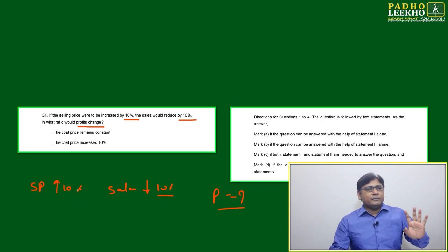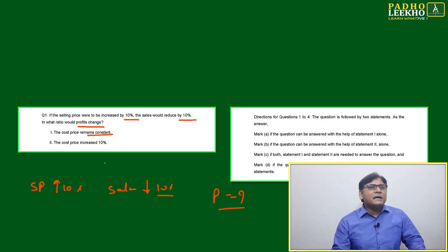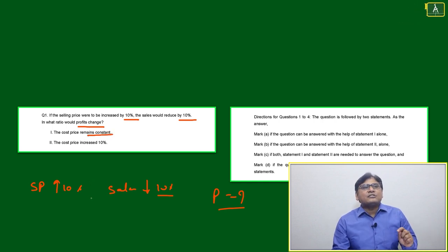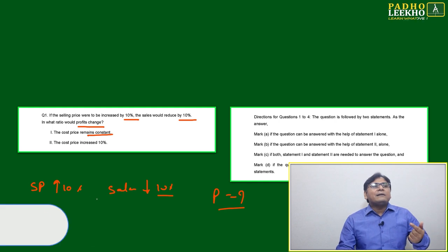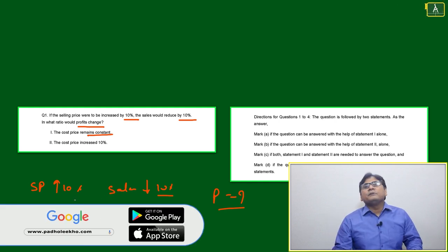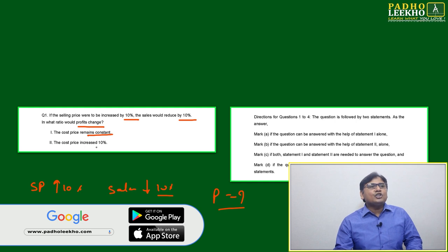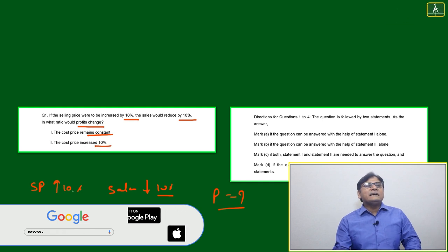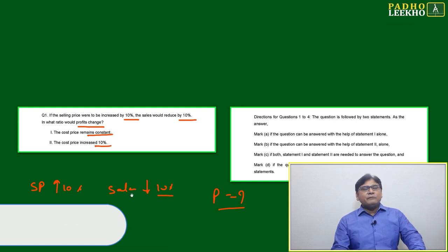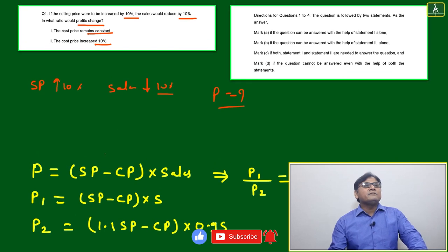Now we read Statement 1: the cost price remains constant. Can we calculate the percentage profit change with this? Statement 2 states: the cost price increased by 10 percent. We first check Statement 1.